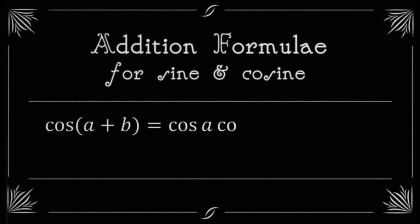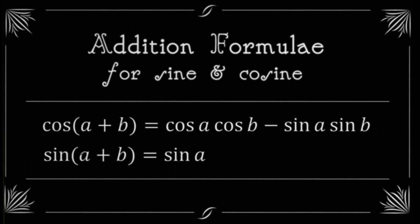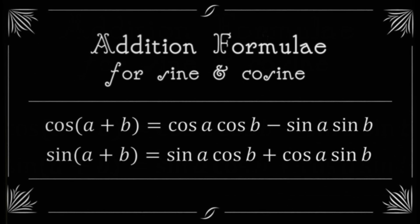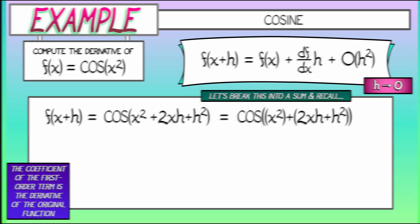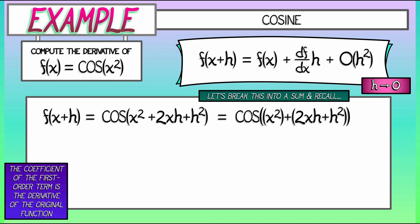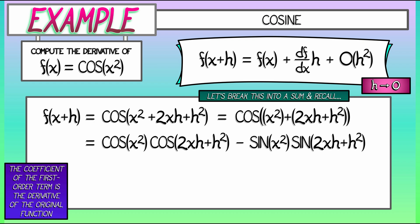What we're going to need is that cosine of quantity a plus b is cosine of a cosine of b minus sine of a sine of b. Okay, so let's go back to the problem at hand where our a is x squared, our b is quantity 2xh plus h squared. Applying that cosine addition formula, we get cosine of x squared times cosine of quantity 2xh plus h squared. Then we subtract sine of x squared times sine of quantity 2xh plus h squared.